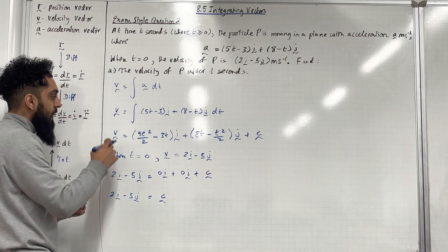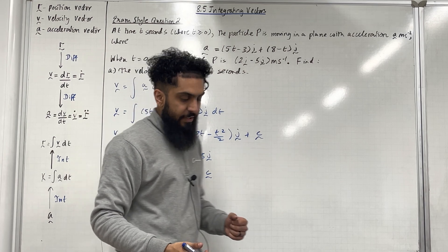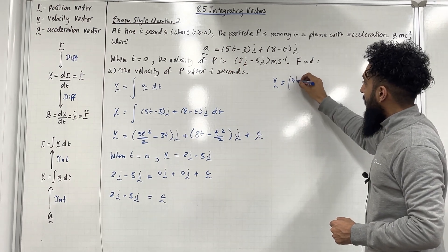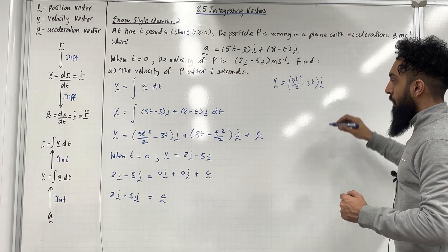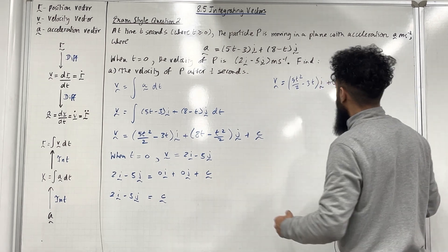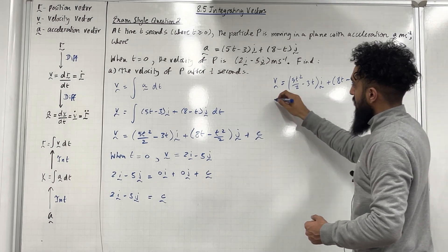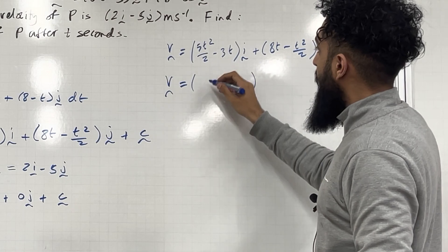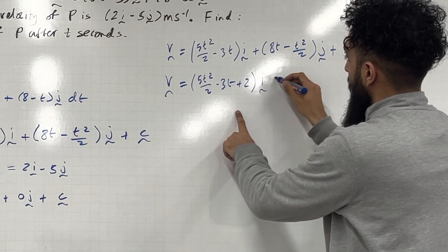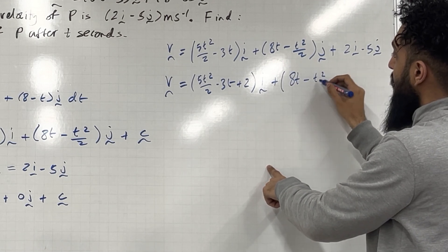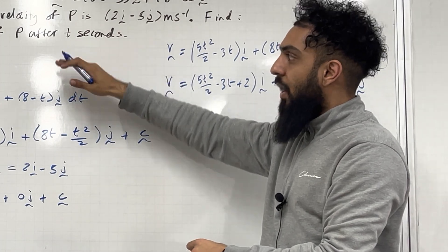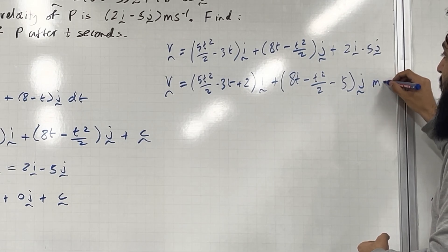We put the constant of integration back into the velocity equation. The velocity vector in full is (5T squared over 2 minus 3T)I plus (8T minus T squared over 2)J plus the constant 2I minus 5J. Collecting the I's and J's, this becomes (5T squared over 2 minus 3T plus 2)I plus (8T minus T squared over 2 minus 5)J meters per second.